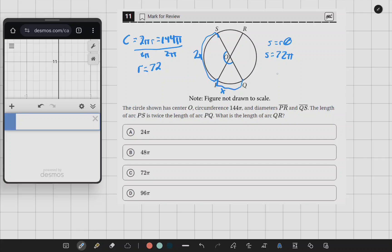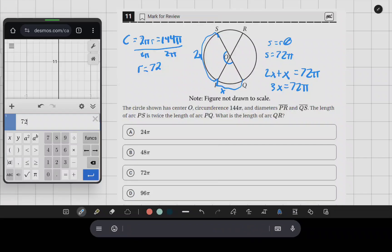So we have 2x plus x equals 72π, which leaves us with 3x equals 72π. We can just do 72 divided by 3, and that gives us 24.